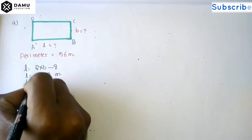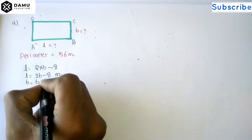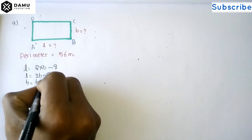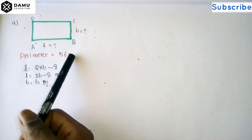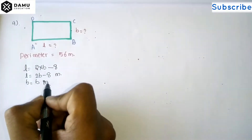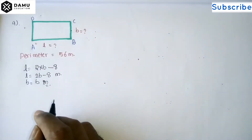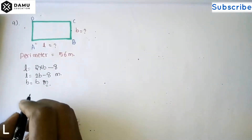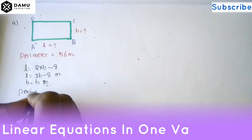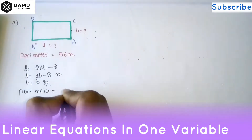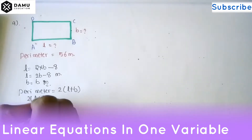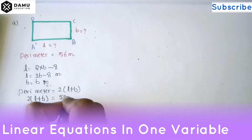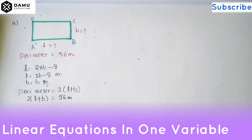We let breadth equal b meters. The perimeter given is 56 meters. We need to find the length and breadth. The perimeter formula is 2 into (L + b), so 2 into (L + b) equals 56 meters.